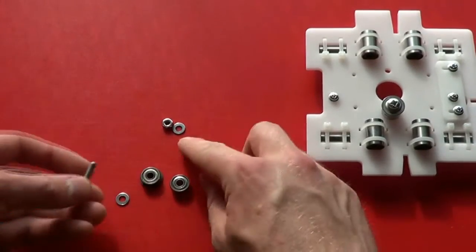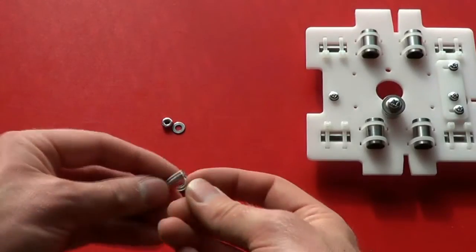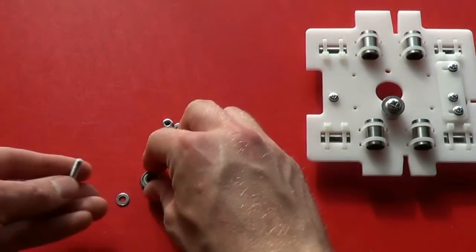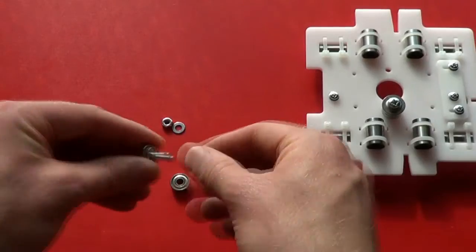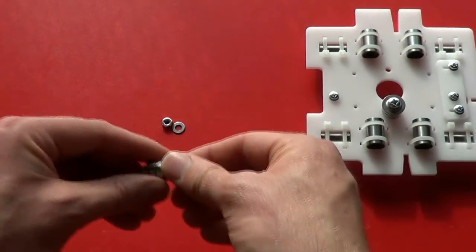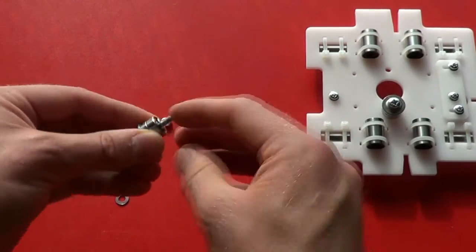Do the same for the other. It's absolutely identical. Screw, washer, flanged bearing, plane bearing, another washer.